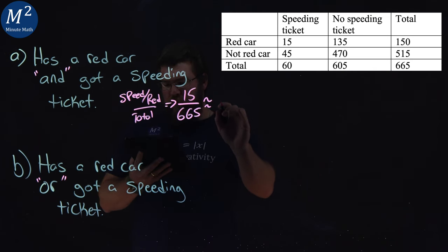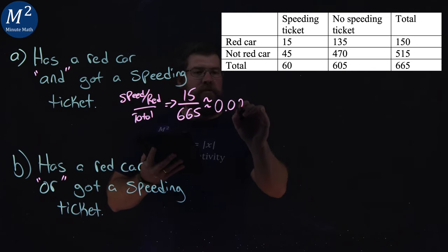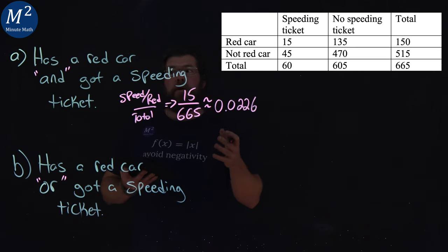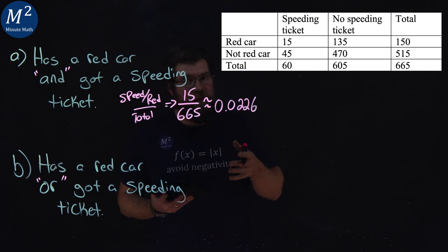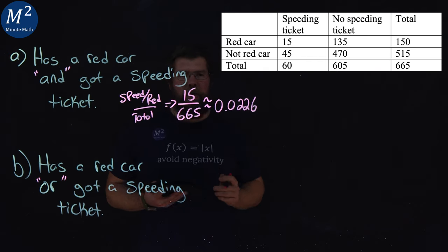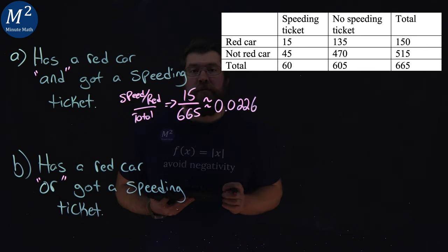And if we simplify that, we get 0.0226. So the probability of having a red car and a speeding ticket, combining them both, is 15 out of 665 or approximately 0.0226.